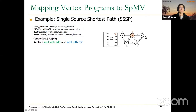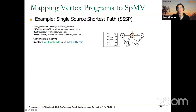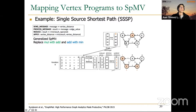We call it generalized because we change the operations depending on the algorithm. For SSSP, we replace multiplication with addition and replace addition with minimum. As an example: in the initial state, the source is A and we want to know the distance to all other nodes. In iteration zero, the current distances vector has 0 for A and infinity for everything else.